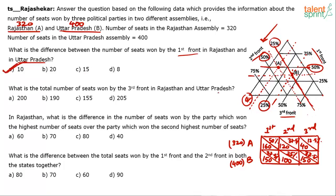Next question: What is the total number of seats won by the Third Front in both Rajasthan and Uttar Pradesh? Third Front in Rajasthan = 40, Third Front in Uttar Pradesh = 150. Total = 40 + 150 = 190. Option B is the answer.